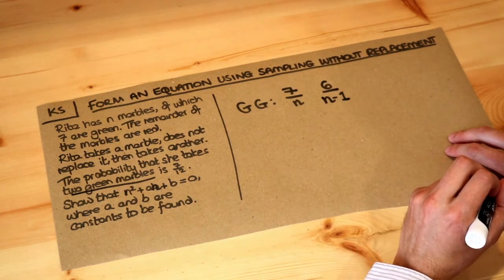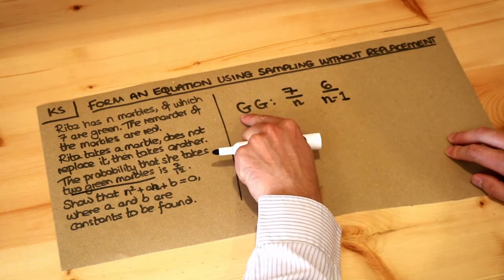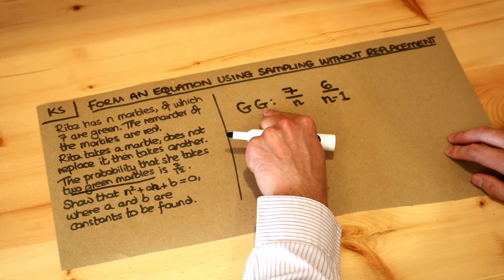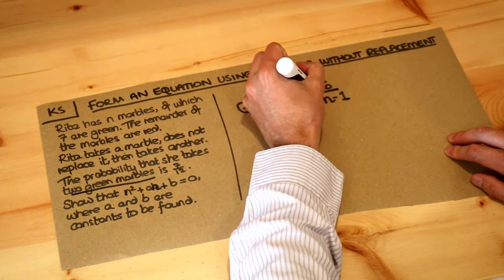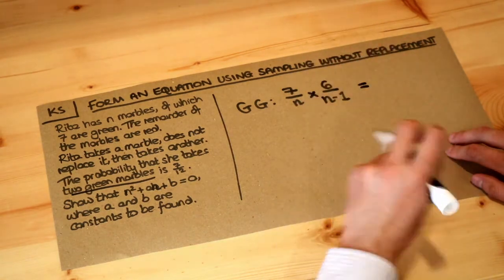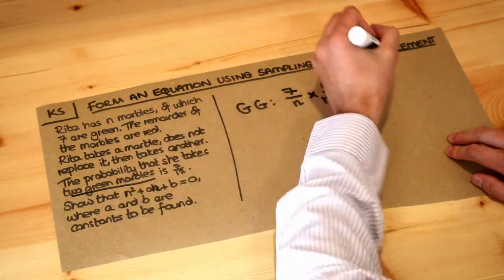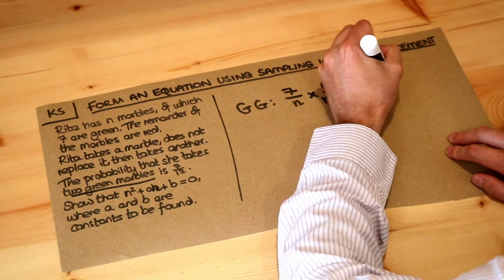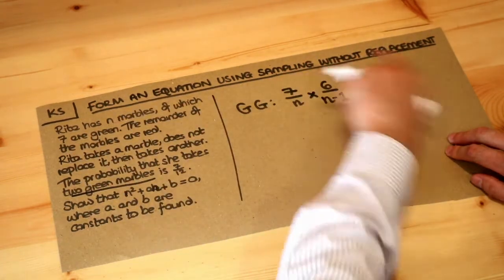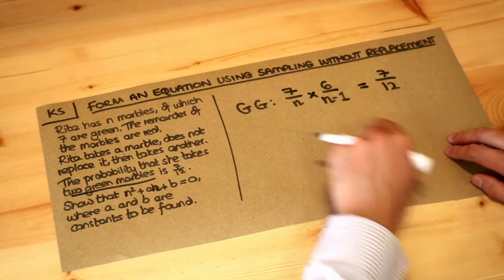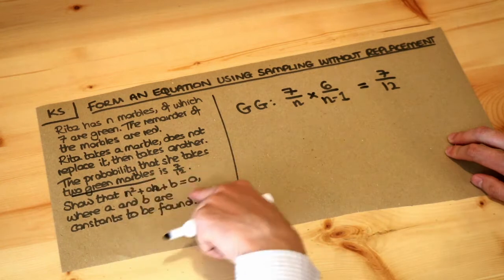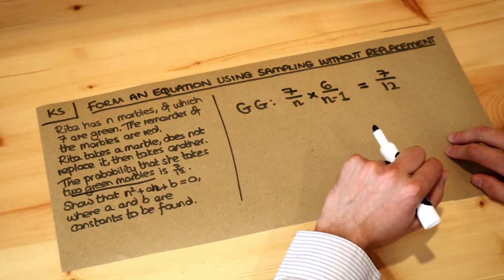And then what do we usually do if we want to find the probability of the first thing and the second thing? So the probability of the first marble is green and the second marble is green. Well when we use the word and, we times these probabilities together. Now we're told that this probability is 7 twelfths. And now we've managed to use the information provided to generate an equation. And all we need to do now is to simplify this equation so that we get something in this nice form, n squared plus something n plus something equals zero.